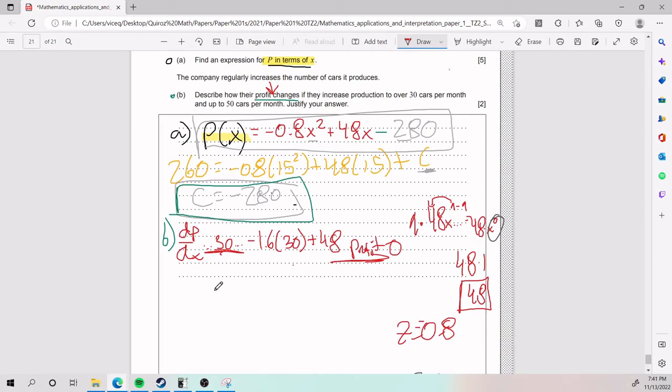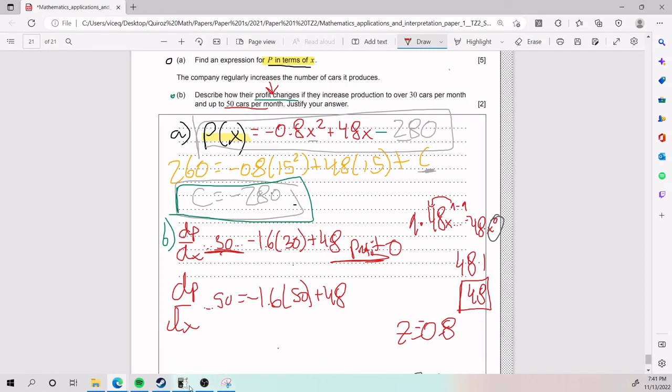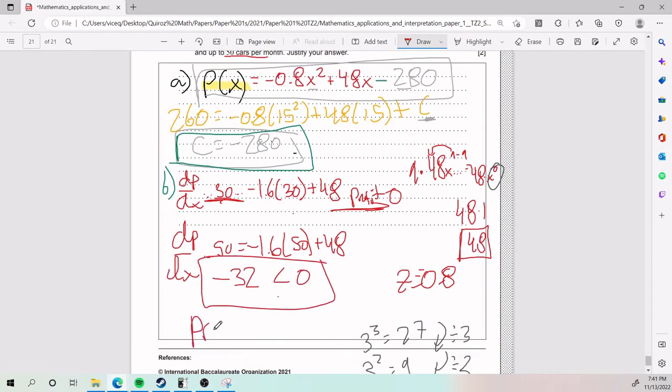What happens if we sell a greater number, for example, 50 cars per month? So, again, dP/dX, but for 50, we have negative 1.6 times 50 plus 48. Will it be positive or negative? Let's find out. Negative 1.6 times 50 plus 48. We can see that it's negative. And so, this negative 32 is less than 0, which means that profit decreases.